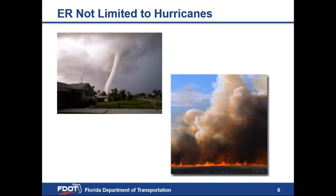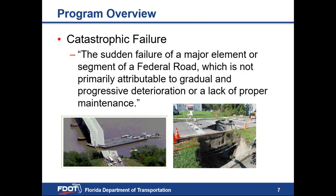Other types of natural disasters that could result in ER funding include tornadoes, like the one that just occurred in the Nashville area, or wildfires, like we hear about in California and Arizona, and occasionally experience here in Florida as well. A catastrophic failure is the sudden failure of a major element or segment of a federal road, which is not primarily attributable to gradual and progressive deterioration or a lack of proper maintenance. Examples include a bridge that collapsed due to impact from a barge, and sinkholes, which we experience more frequently in our area.